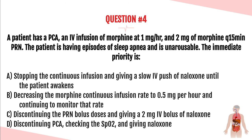The answer is A — stopping the continuous infusion and giving a slow IV push of naloxone until the patient awakens. This patient has signs of opioid-induced respiratory depression, so our priority is to reverse the effects of morphine with naloxone, otherwise known as Narcan. You want to turn off the continuous infusion rather than halving it since the patient is already unarousable. The patient will still need analgesia, which can be provided with PRN doses once they wake up.